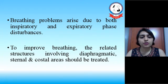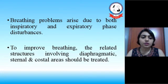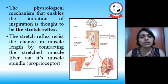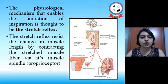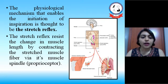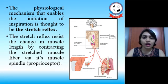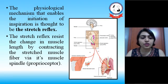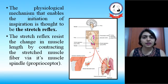Breathing problems arise due to both inspiratory and expiratory phase disturbances. To improve breathing, the related structures involving diaphragmatic, sternal, and costal areas should be treated. As we know, respiration is a reflex procedure. The physiological mechanism that enables the initiation of inspiration is thought to be the stretch reflex, occurring at the level of the medulla and pons where respiratory centers are available. The stretch reflex resists the change in muscle length by contracting the stretched muscle fiber via its muscle spindle, i.e., the proprioceptor.